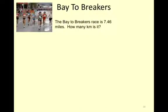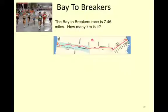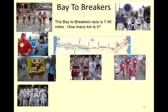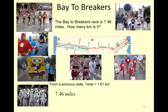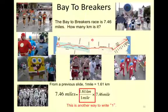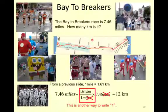Going the other way: Bay to Breakers, which is a goofy run — people really dress up for it, it's a lot of fun. From the previous slide, 1 mile is 1.61 kilometers. 7.46 miles times 1.61 kilometers per mile — there's your conversion. It's about a 12 kilometer run.